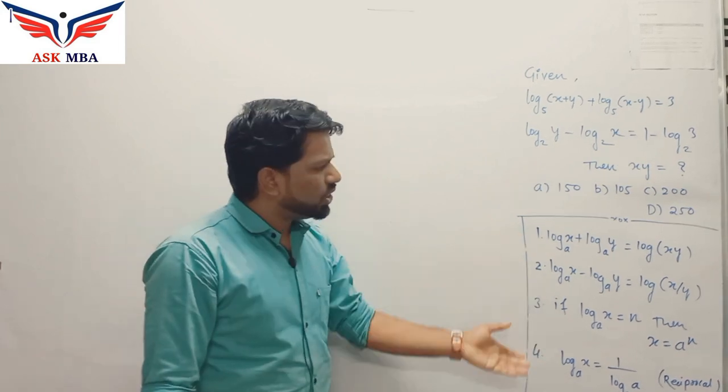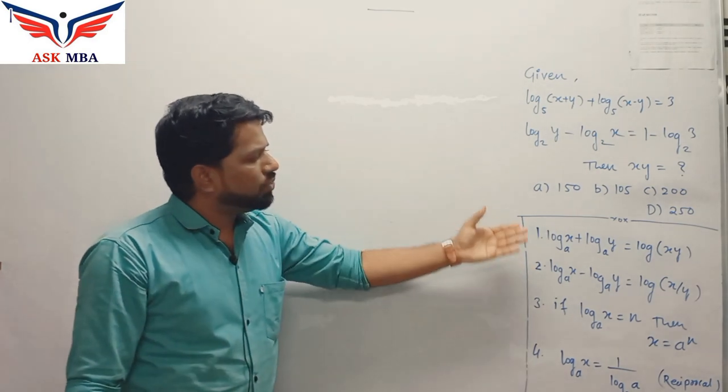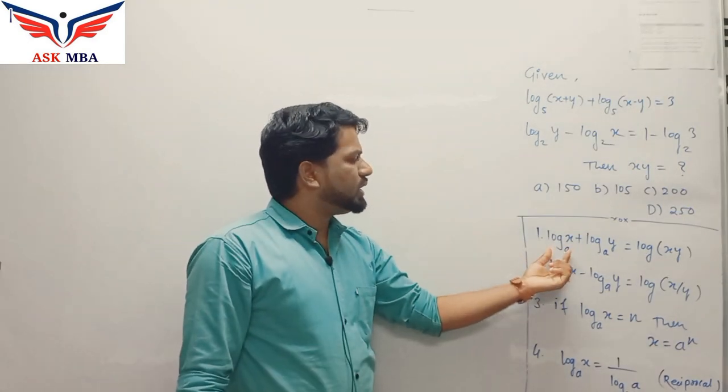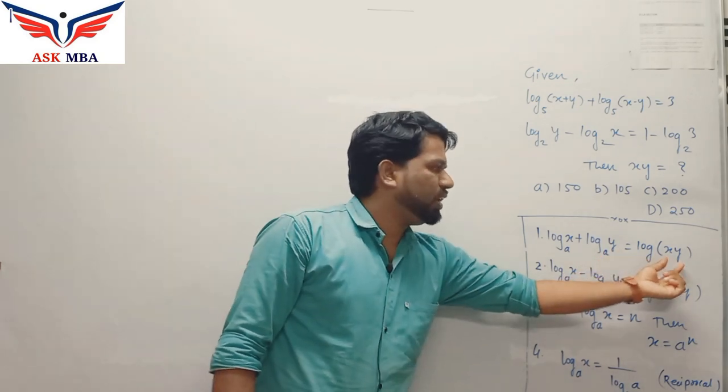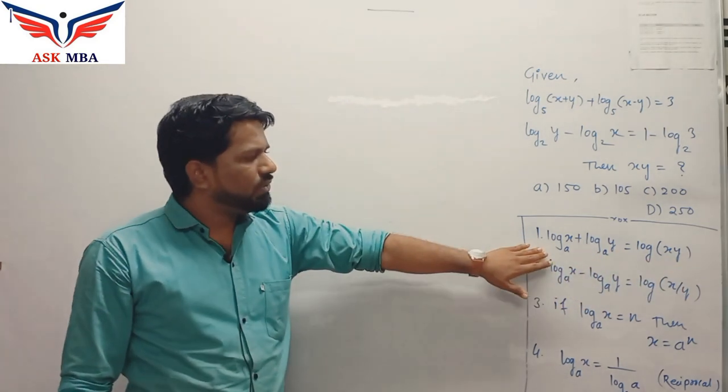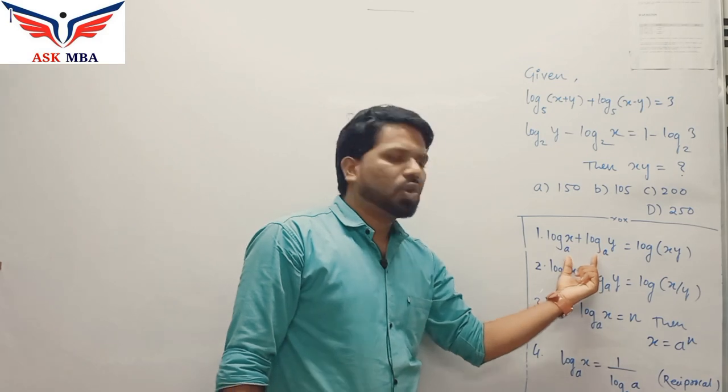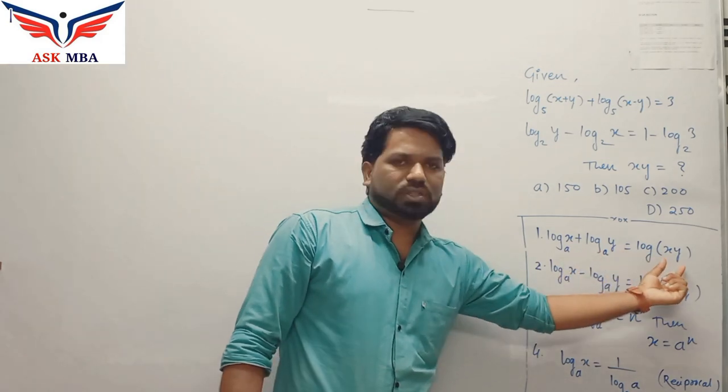You might have already known these formulas but let me tell you one by one in short. First is log x base a plus log y base a equal to log of xy. So the thing is wherever you see two terms of common base, you will get the product.